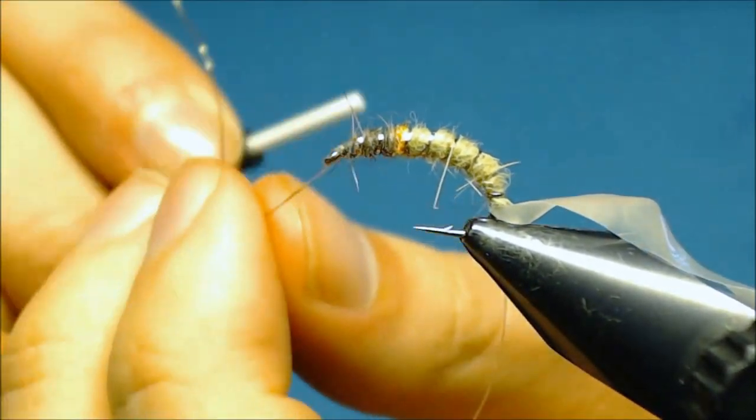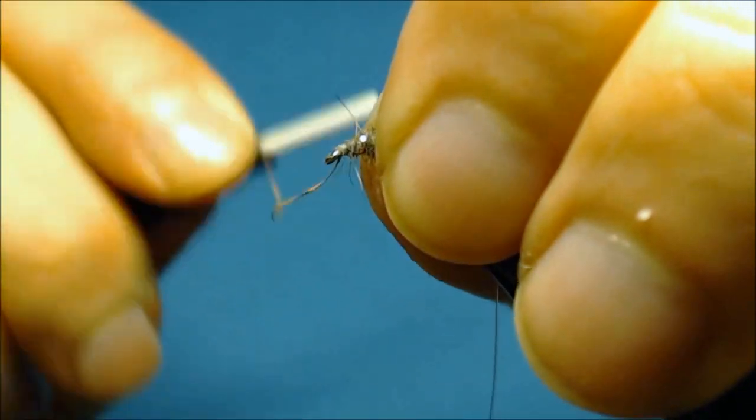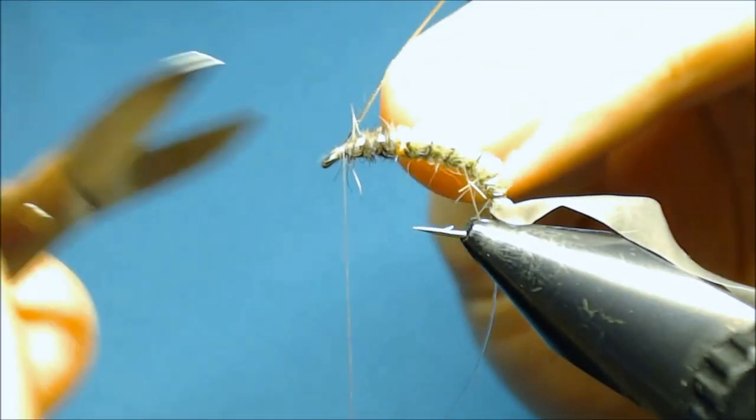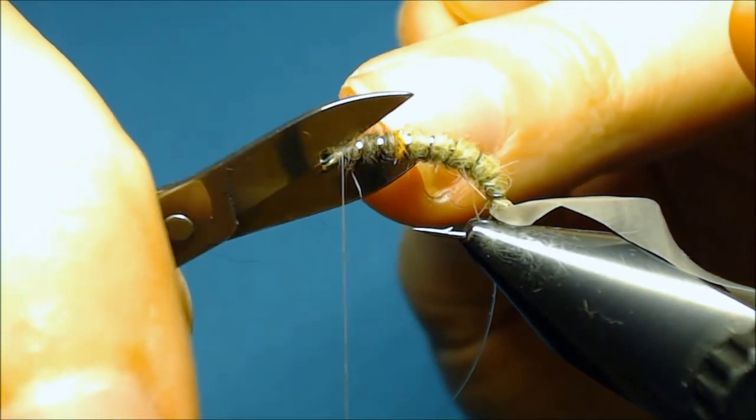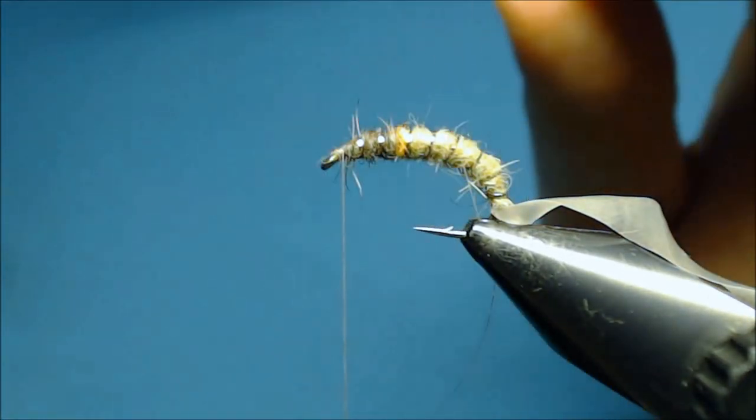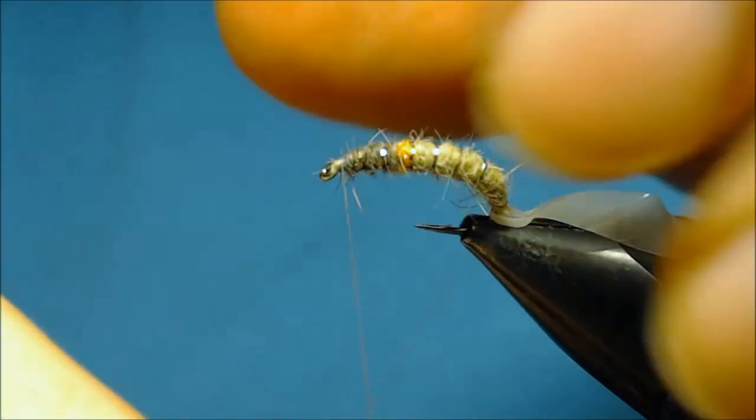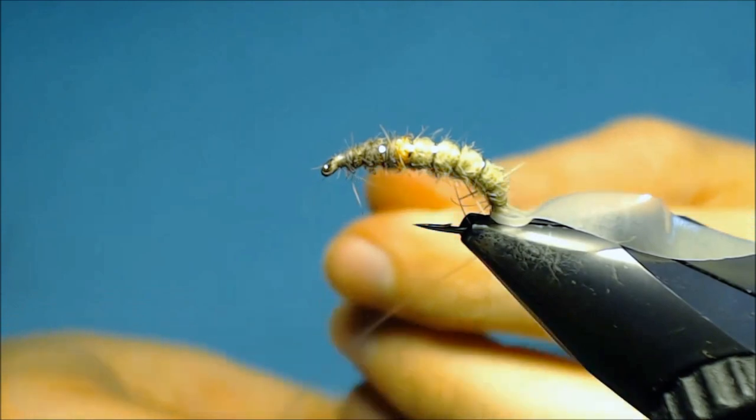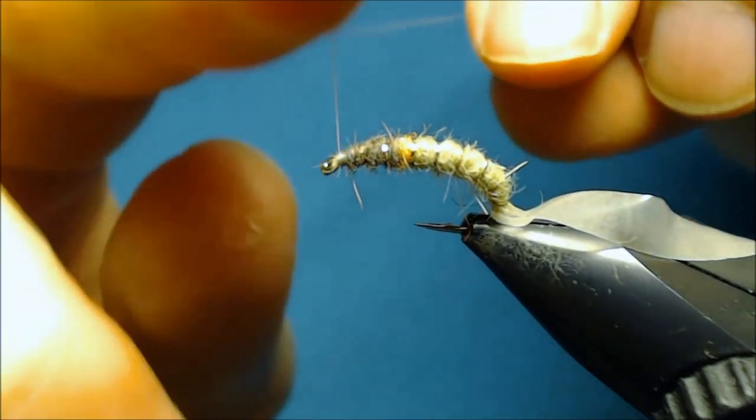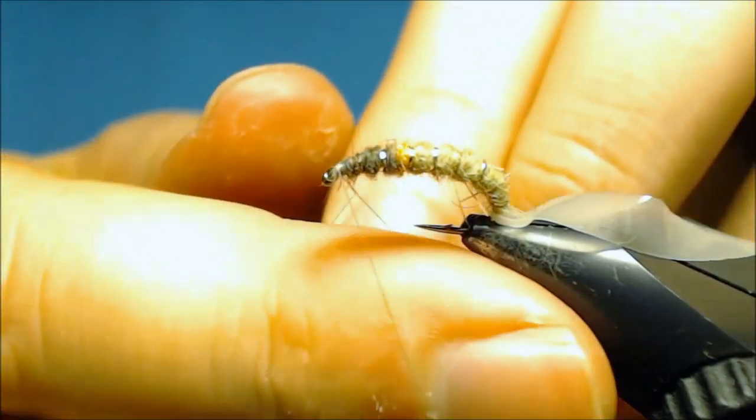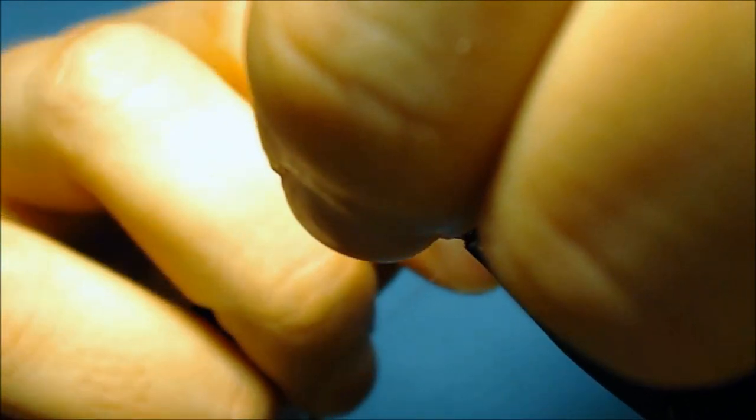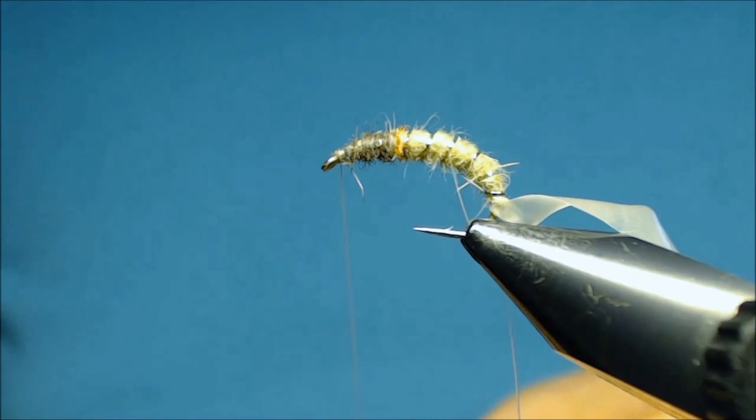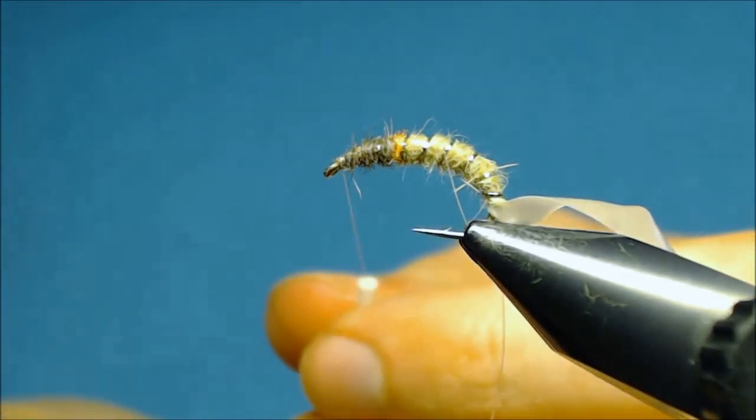And now you can really pull on the thread to secure as well. You don't want this to slip out and unravel and mess up your whole fly. And now I just throw in another half hitch so the thread won't come undone.